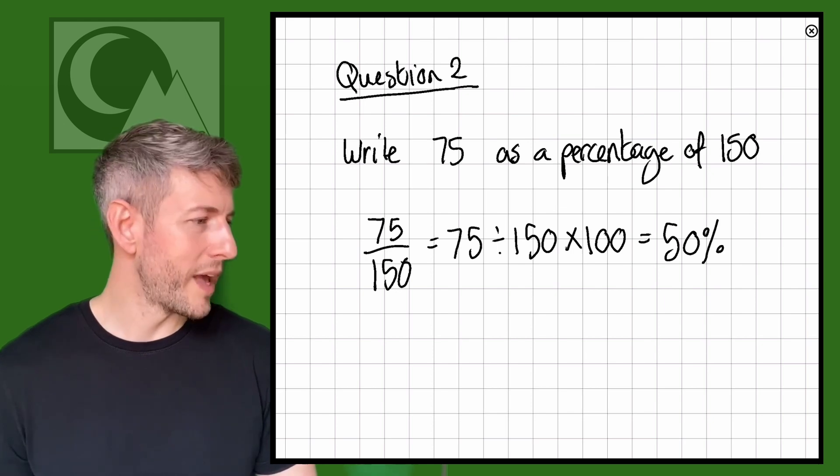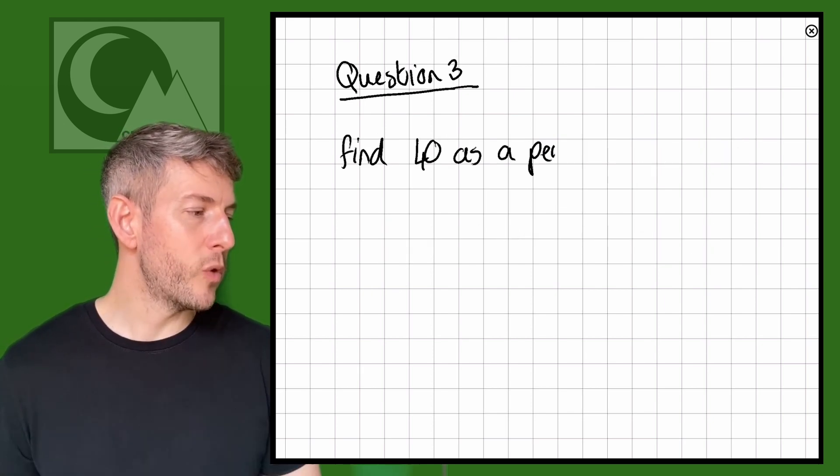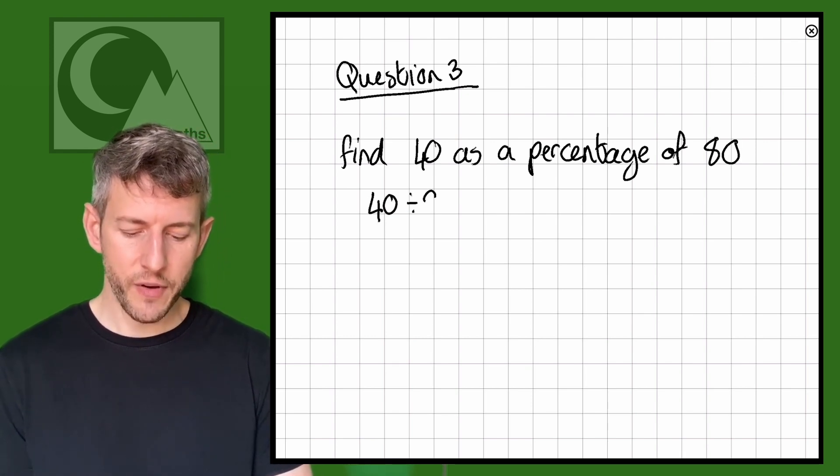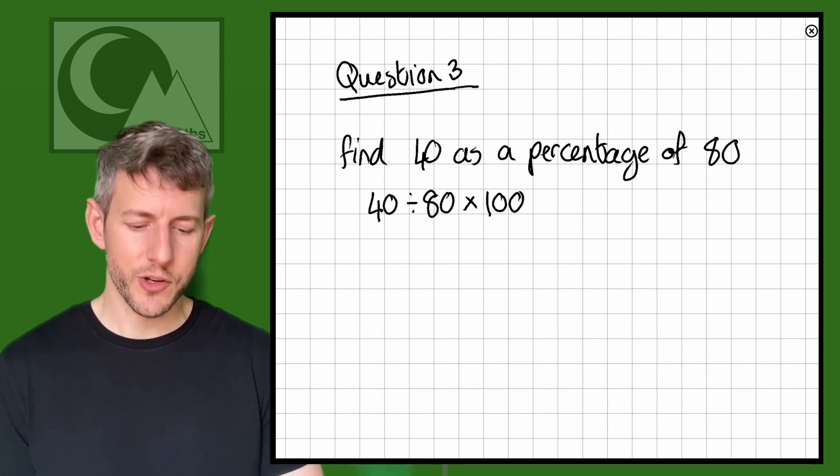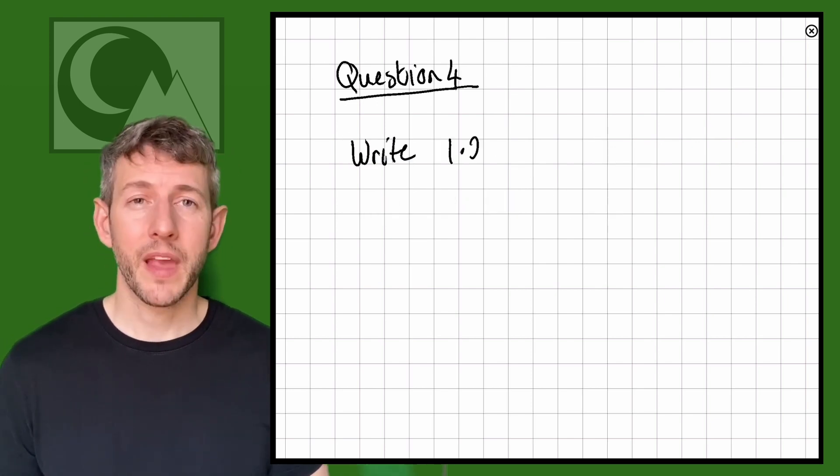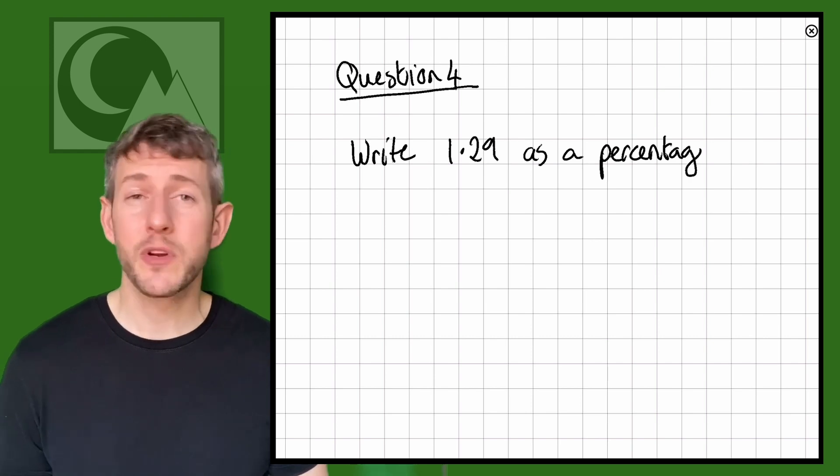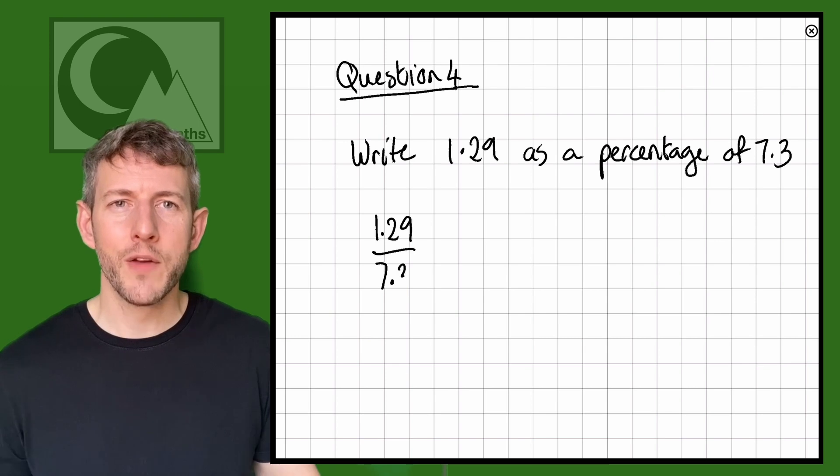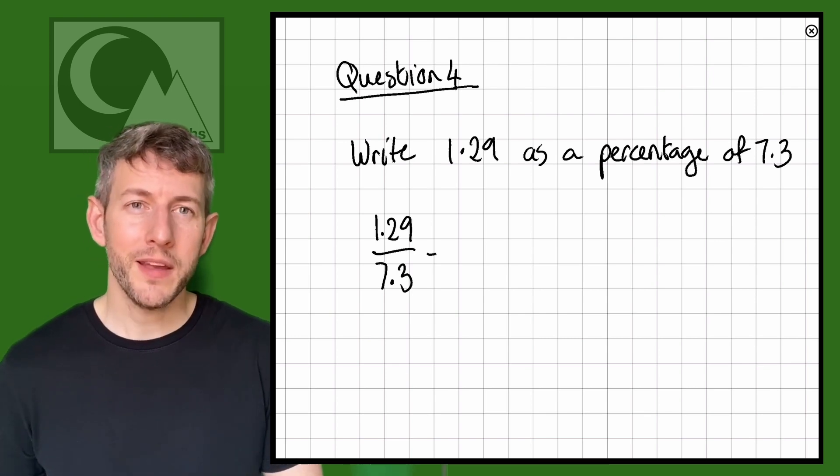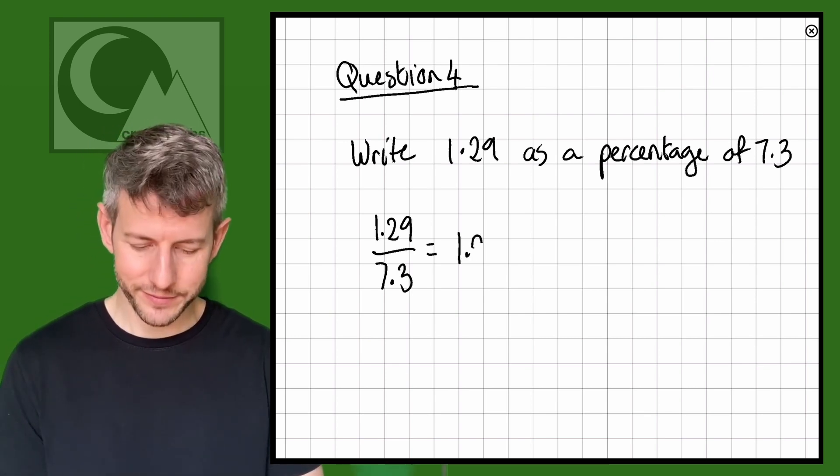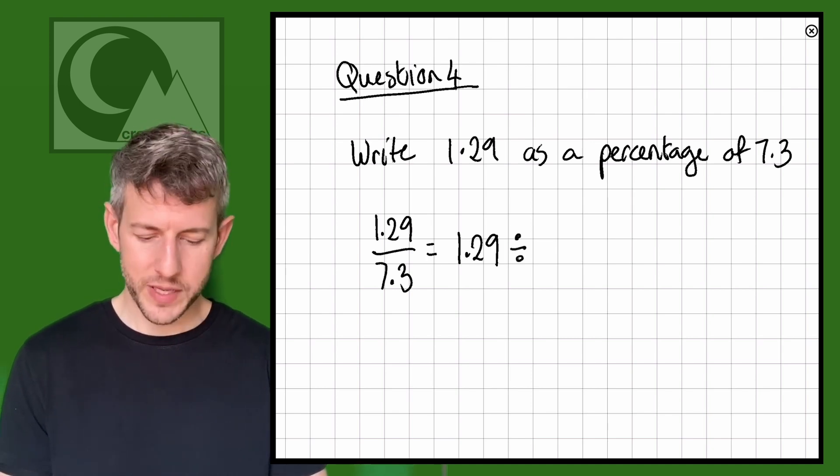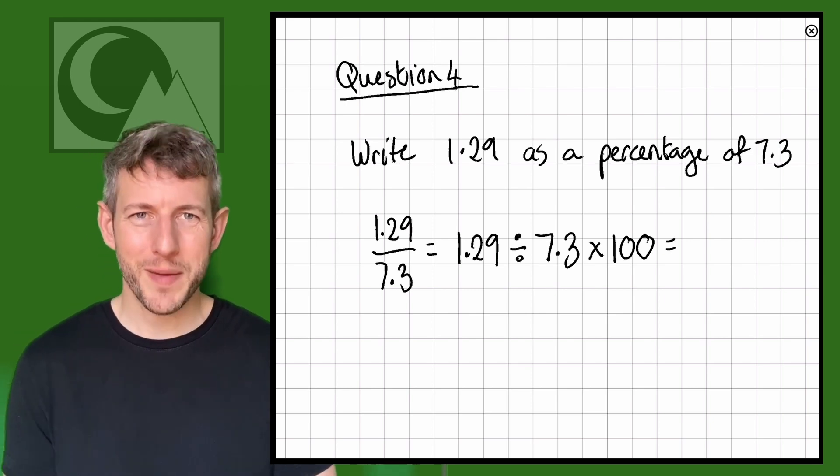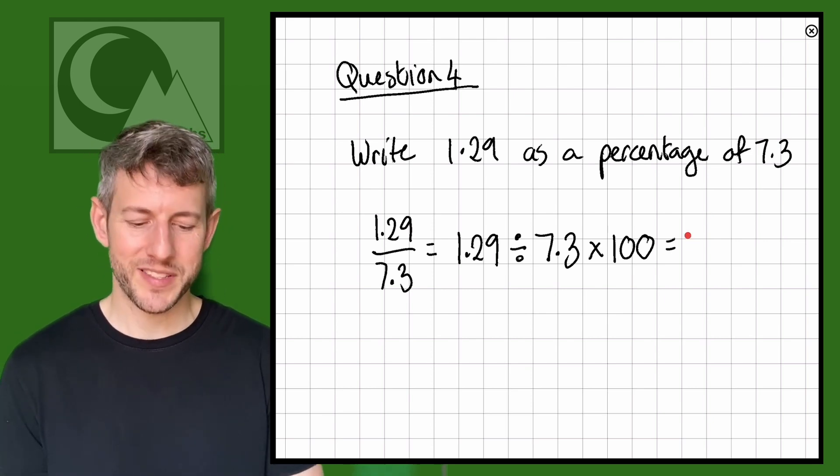Next what we have is our third method, which is 40 as a percentage of 80. So here we go, 40 divided by 80 times 100, 50%. And then lastly, let's try the decimal question because it's the same principle. So we can write this as a fraction, 1.29 over 7.3, and then we do the same thing: 1.29 divided by 7.3 multiplied by 100. There we go, and we've got the same answer again, 17.67%.